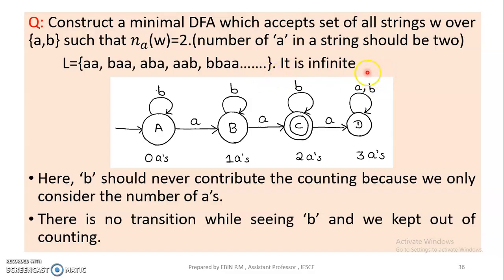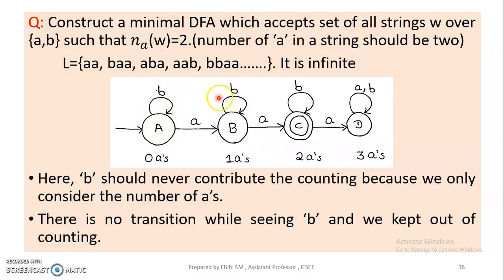So this is the minimal DFA. The number of strings accepted equals the minimum DFA. We know that the accepting state is marked with a double circle.